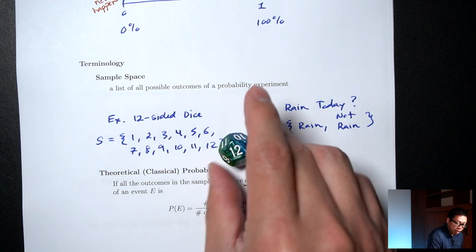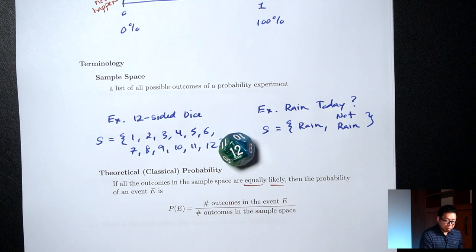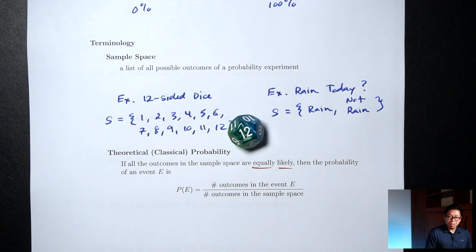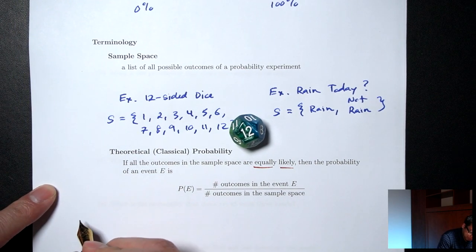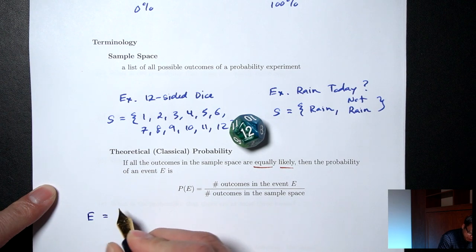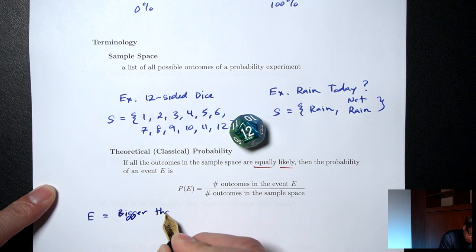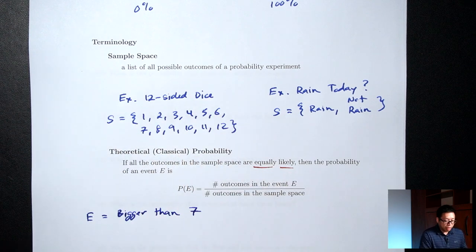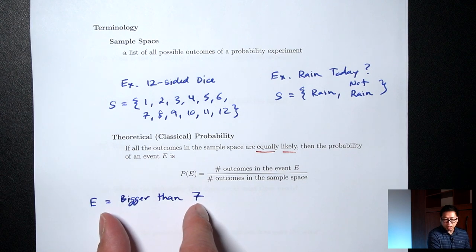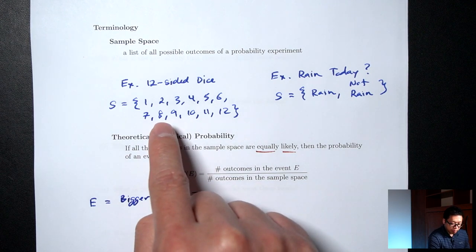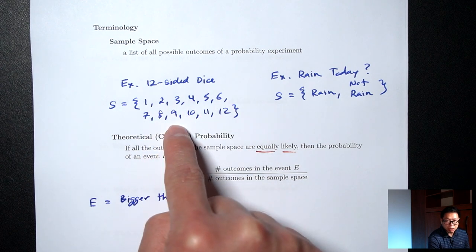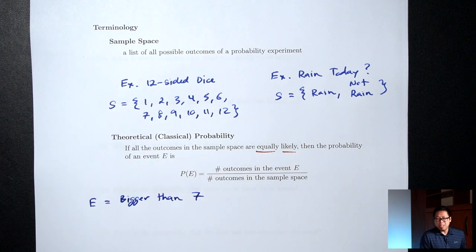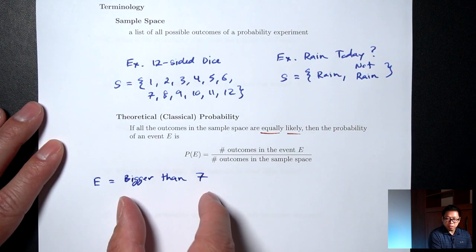Let's do an example with the dice. Say I'm playing a board game with this die and I need a number bigger than seven to win. That's called an event — I'll call it E for event. The event I'm interested in is 'bigger than seven,' which would be 8, 9, 10, 11, 12. An event is really just a sub-collection of the sample space, usually described with words like 'bigger than seven.'